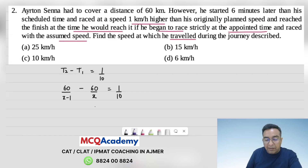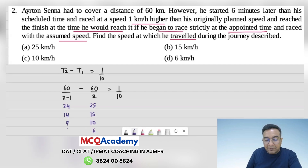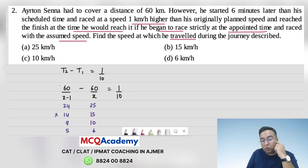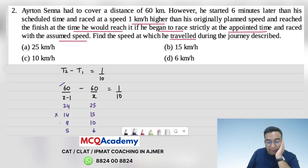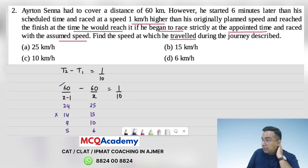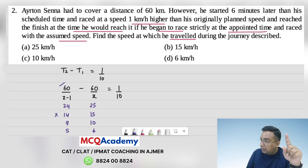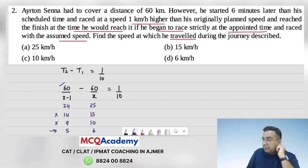Look at the options: option 1 is 25 and 24, option 2 is 15 and 14, option 3 is 10 and 9, option 4 is 6 and 5. Option with 15 and 14 cannot be the answer because 7 appears in the denominator and there is no multiple of 7 in the numerator. Similarly, 9 and 10 cannot be the answer because 9 has two factors of 3, while 60 has only one factor of 3, so a factor of 3 would survive — that option is also eliminated.